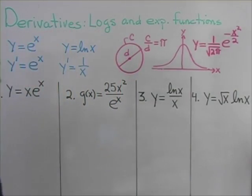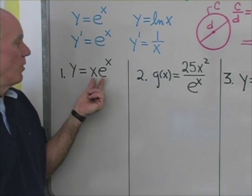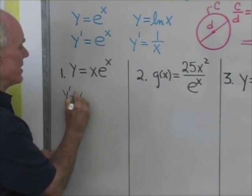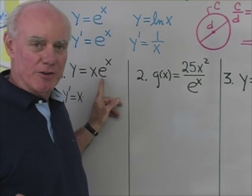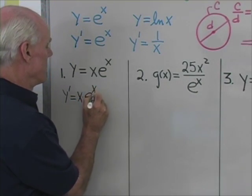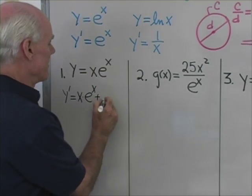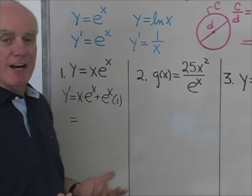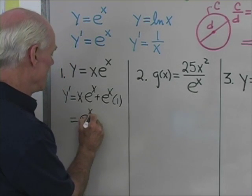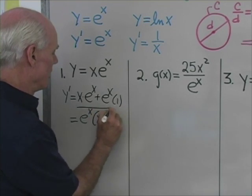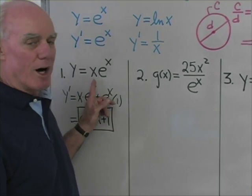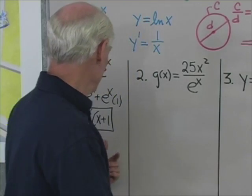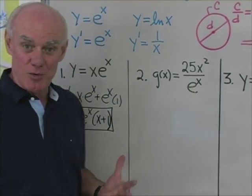Let's go back and look at some derivatives. I want to differentiate y equals x times e to the x. I have the product of two things, so I'm going to use the product rule. y prime is going to be the first, x, times the derivative of the second — the derivative of e to the x is e to the x — plus the second, e to the x, times the derivative of the first, which is 1. I'll factor e to the x out of both terms: e to the x times the quantity x plus 1. So that's the derivative of y equals x·e^x.